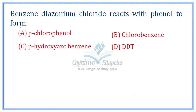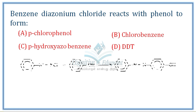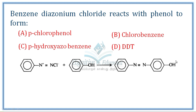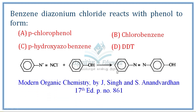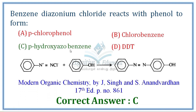Next question: Benzene diazonium chloride reacts with phenol to form? This is the coupling reaction. Benzene diazonium chloride reacts with phenol — the para position has a hydroxy group — giving a system known as parahydroxy azobenzene. Option C is the correct answer.